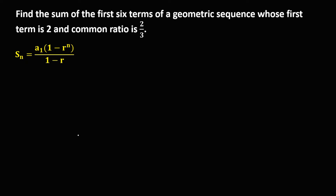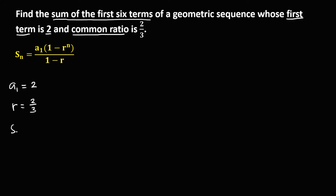So using this formula to find the sum of a geometric sequence, in the given, since the first term is positive 2, so therefore a sub 1, that's the first term, equals positive 2. Then for the common ratio, that's r, equals positive 2 over 3. And since we're looking for the sum of the first six terms, so therefore s sub n equals s sub 6, which means n is equal to 6.